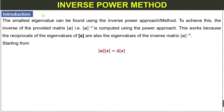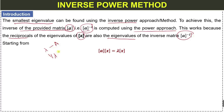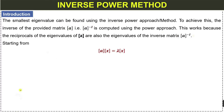Introduction to the inverse power method: the smallest eigenvalue can be found using the inverse power method. To achieve this, the inverse of the given matrix A inverse is computed using the power approach. This means we apply the power method on the inverse matrix to get the smallest eigenvalue of matrix A. This works because the reciprocal of the eigenvalues of matrix A are also the eigenvalues of the inverse matrix. If lambda is the eigenvalue of matrix A, then 1/lambda will be the eigenvalue of A inverse.